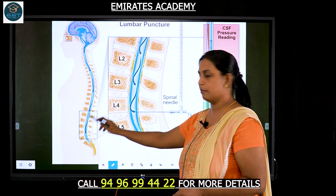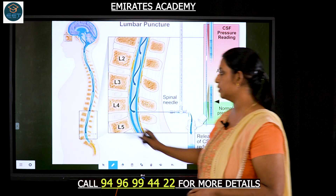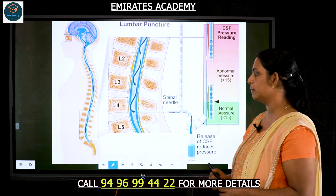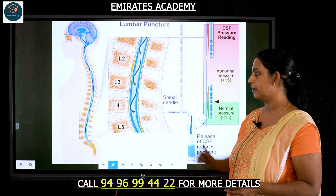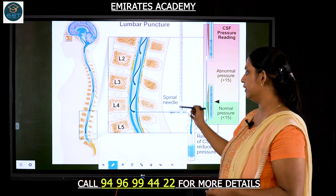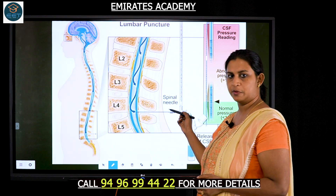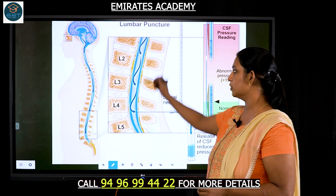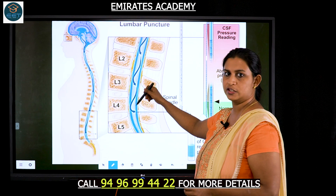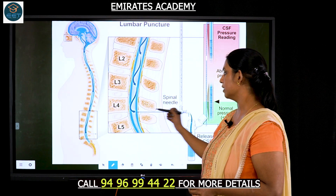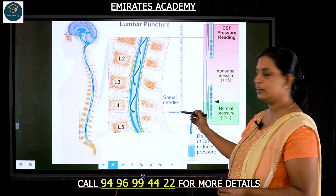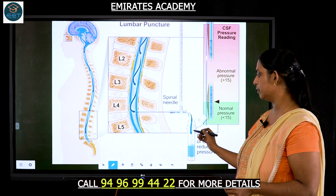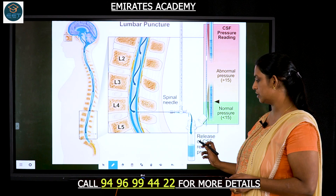This is a diagram of the lumbar puncture where vertebrae L3, L4, L5 are present in the lower portion of the lower back. A spinal needle, which is a special type of needle, is inserted between the vertebrae. Because of the pressure of the CSF flowing, it will be pushed into the spinal needle, and upon opening the valve, it will be collected into a sterile container.